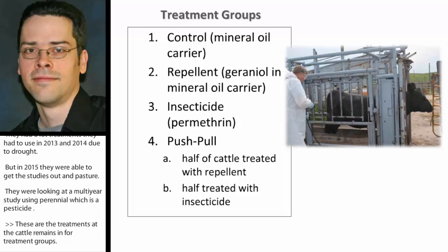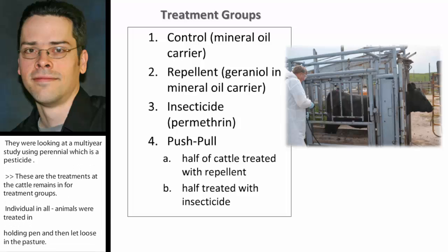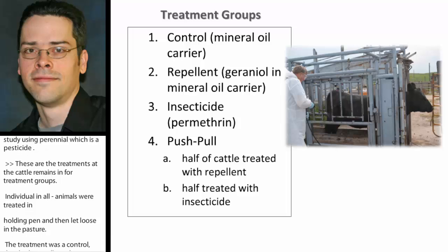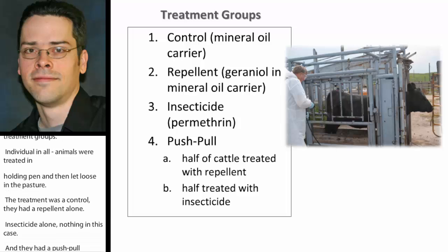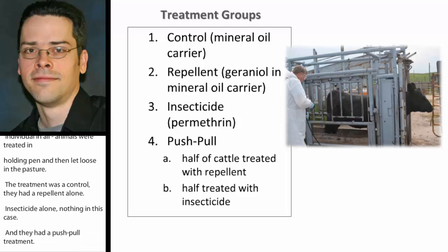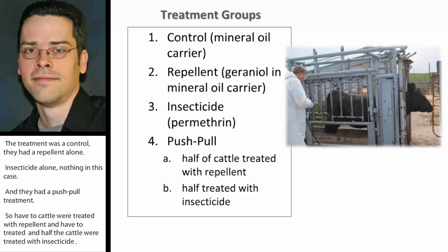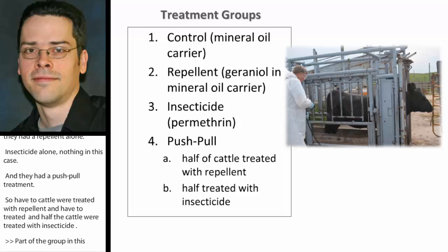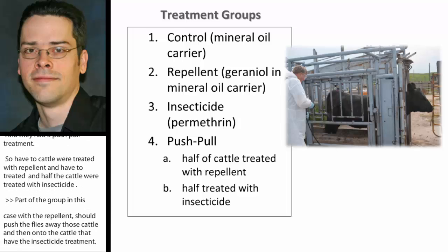The treatments included a control, a repellent alone, an insecticide alone (permethrin), and a push-pull treatment where half the cattle were treated with repellent and half with insecticide. This is similar to what is done for grasshoppers on rangeland: treating part of the group with a repellent should push flies away from those cattle and onto cattle with the insecticide treatment, thereby reducing insecticide application costs in the fourth treatment.